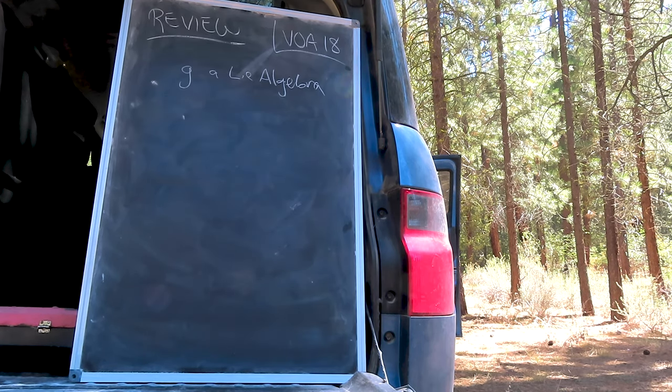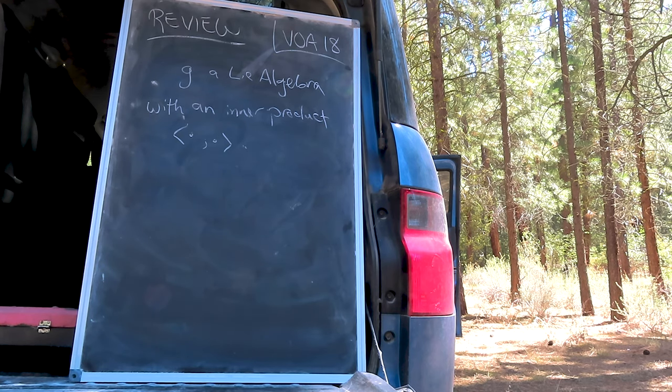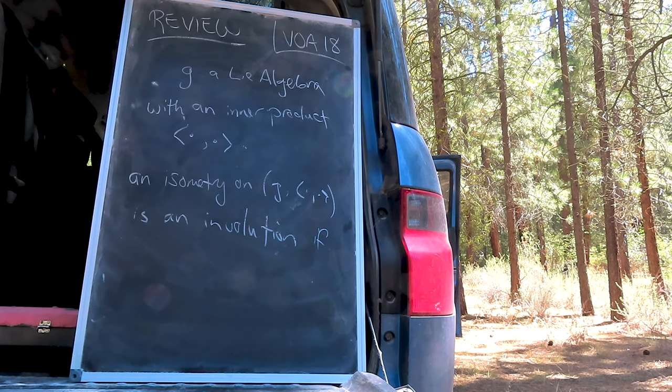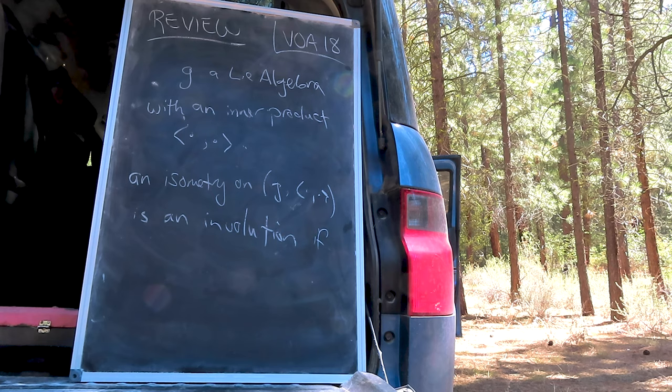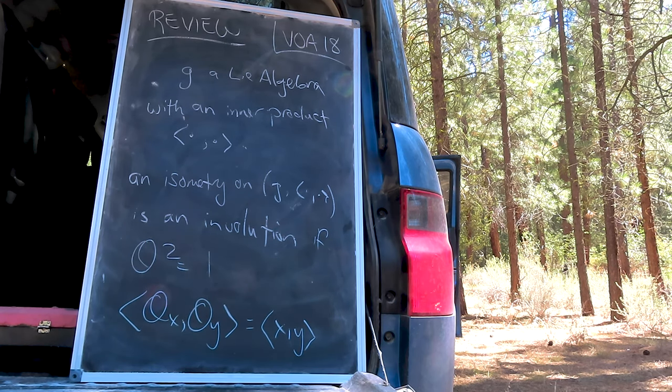Let G be a Lie algebra with an inner product. You might remember that an isometry, an automorphism that preserves the inner product, is an involution on G if it squares to one.